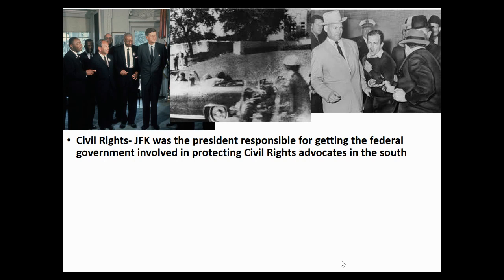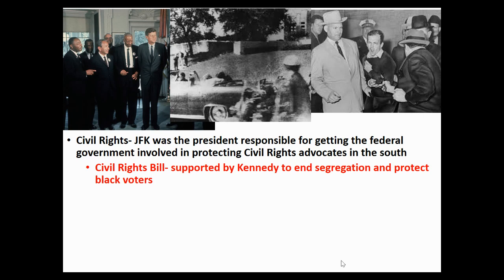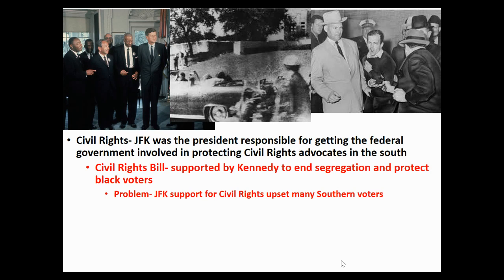Now let's talk about JFK. He is the first president responsible for getting the federal government involved in protecting civil rights advocates in the south — you saw him getting involved with the Freedom Riders and with James Meredith. You can see JFK standing with Martin Luther King in the upper left-hand corner. JFK, in conjunction with King, was promoting a civil rights bill that would go to Congress to end segregation and protect black voters. This was a key reason for the March on Washington — 250,000 people there to show a public demand for the government to end segregation in the south. The problem was JFK's support for civil rights upset many white southern voters.